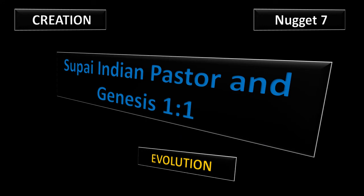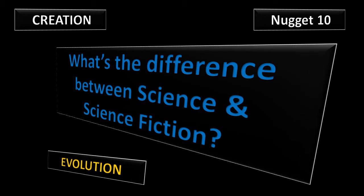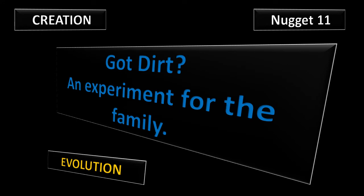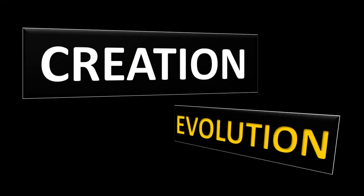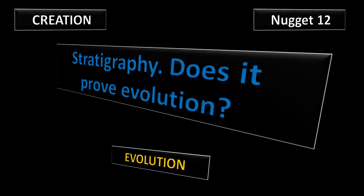Nugget 7: A Supai Indian pastor has Genesis 1-1 in his church. Nugget 10: What is the difference between science and science fiction? Nugget 11: It's an experiment for school groups, church groups, or families. It's called Got Dirt? We have a lot of people that have told us that they have used this nugget and done this experiment at their home or with their school group. It's fun. Just do it.